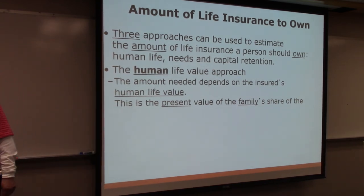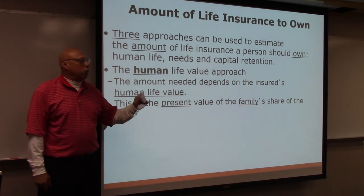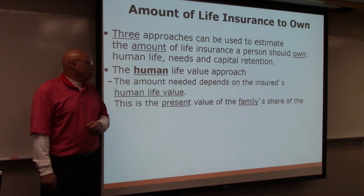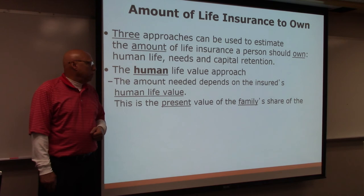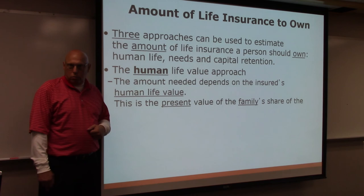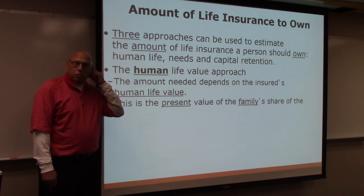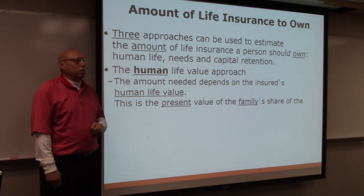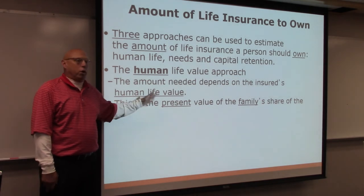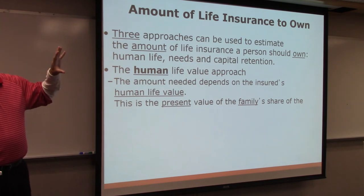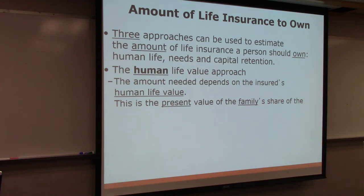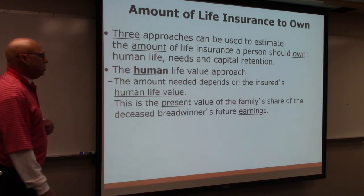The human life value approach: the amount of insurance you need depends on the present value of the family's share of future earnings. Say dad makes $10,000 a month and the cost of living is $9,000, but $1,500 of that is dad's personal costs — country club, a boat, his own food. If dad is gone, those costs go away. So you calculate the family's share of dad's future earnings.